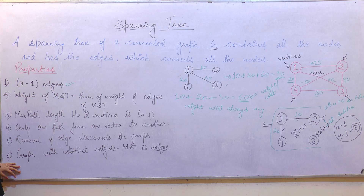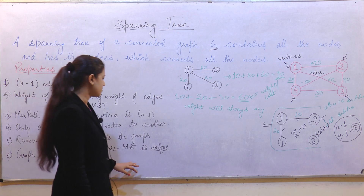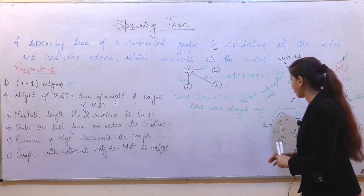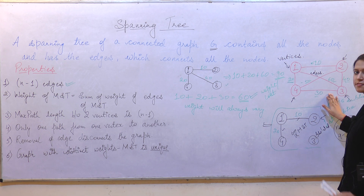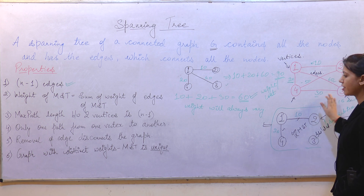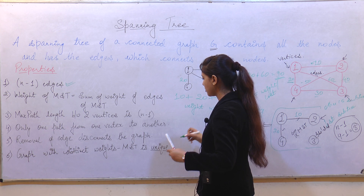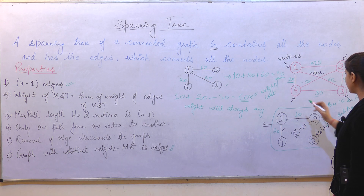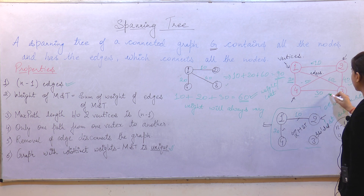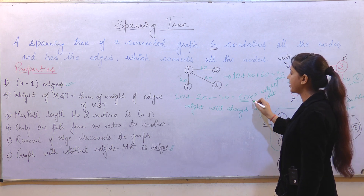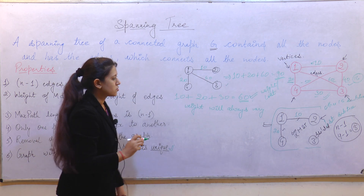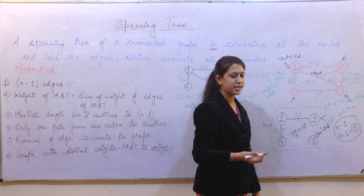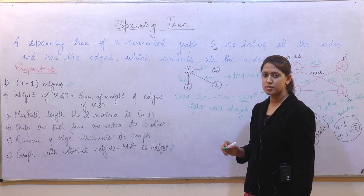The last property is that a graph with distinct weights has a unique minimum spanning tree. Distinct weights means every edge of the graph has a different weight — no two edges share the same weight. This will always give us a unique spanning tree: when we create all 16 sub-trees of the original spanning tree, it will always yield a unique minimum spanning tree. This concludes the basic introduction to spanning tree; we will study Prim's and Kruskal's algorithms in the next lecture.